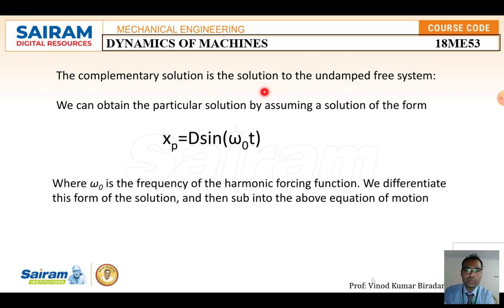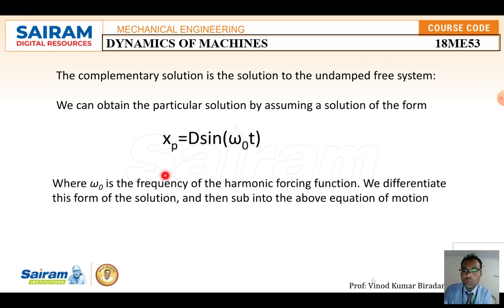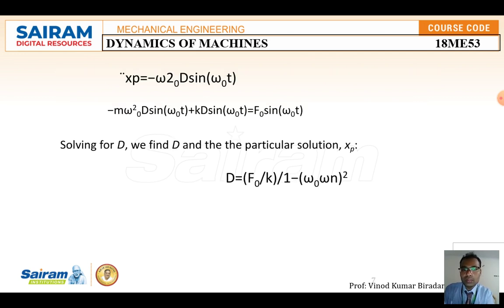We can obtain the particular solution by assuming a solution of the form Xp = D sin(ωt), where ω₀ is the frequency of the harmonic forcing function. This angle ω₀t is with respect to the horizontal line with respect to time, and D sin(ω₀t) represents the harmonic force. We then differentiate this form of the solution and substitute into the above equation of motion.